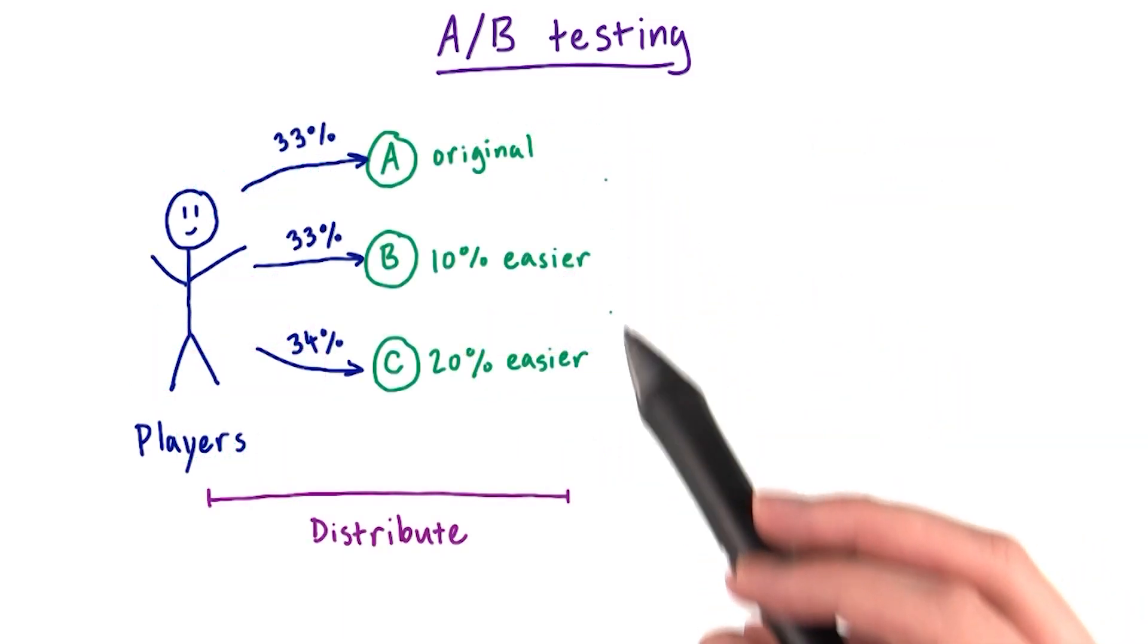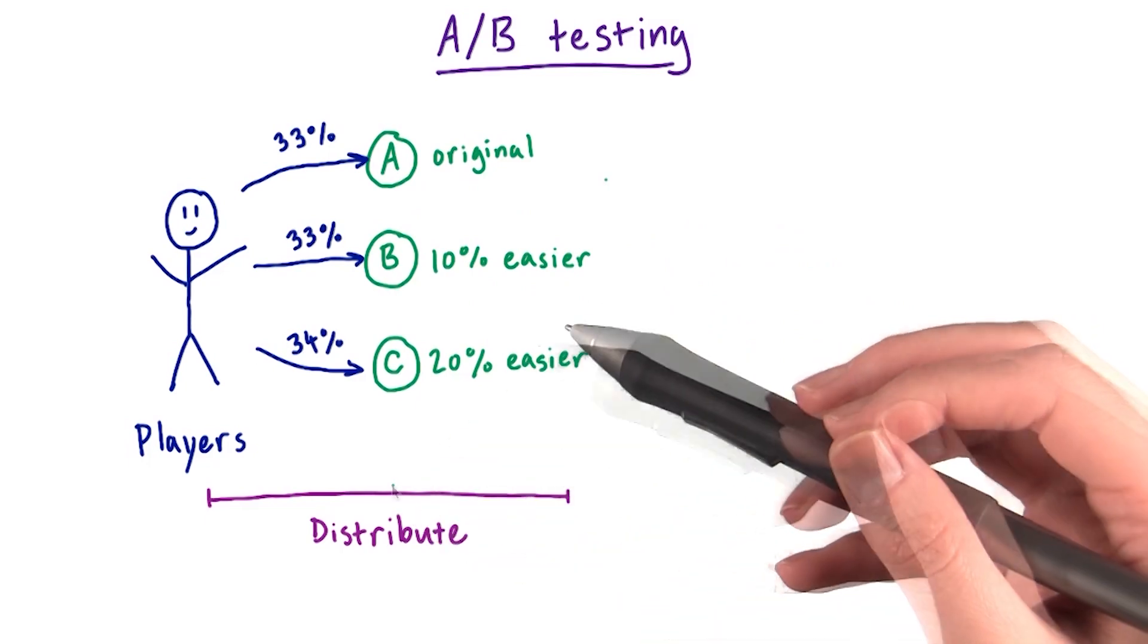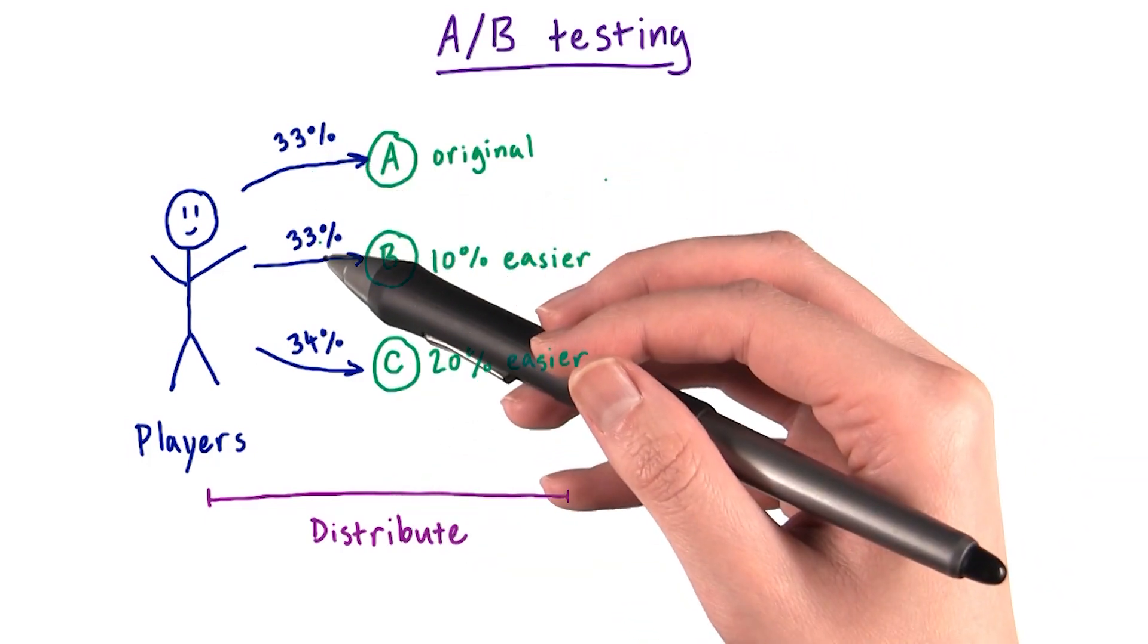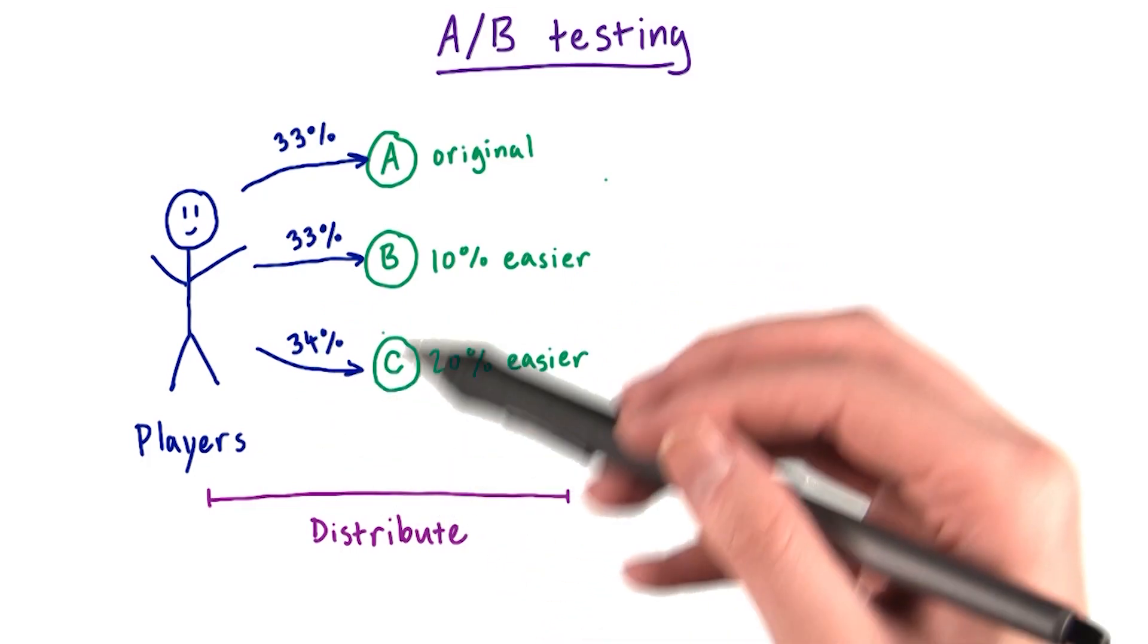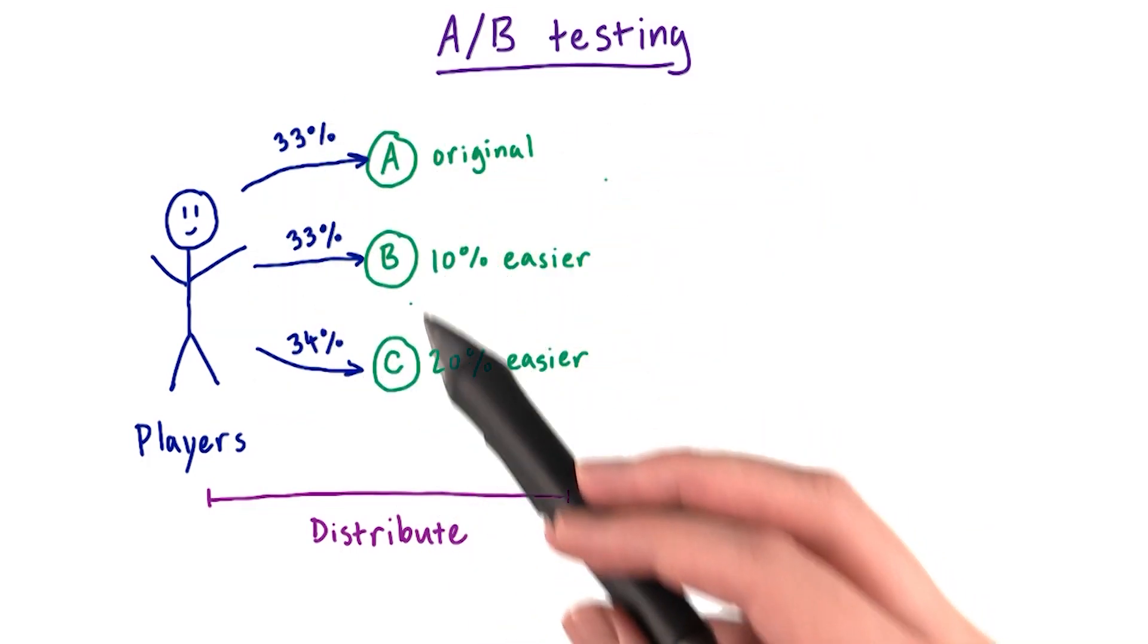The next step is to distribute these versions to our players so that about a third of our players play each version. This is usually done by percentage, so we have 33, 33, and 34%, which adds up to a total of 100%, distributed to versions A, B, and C.